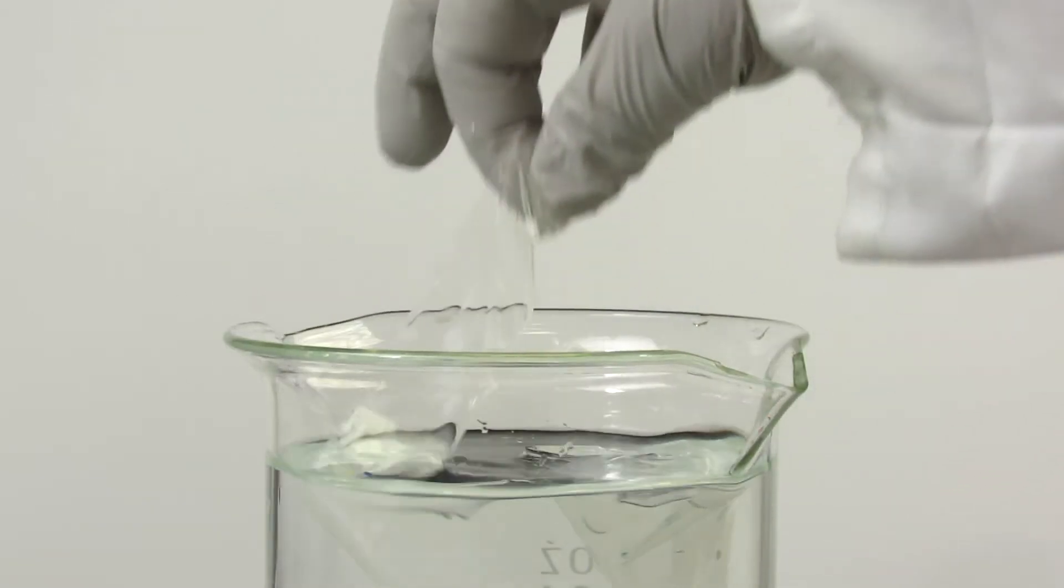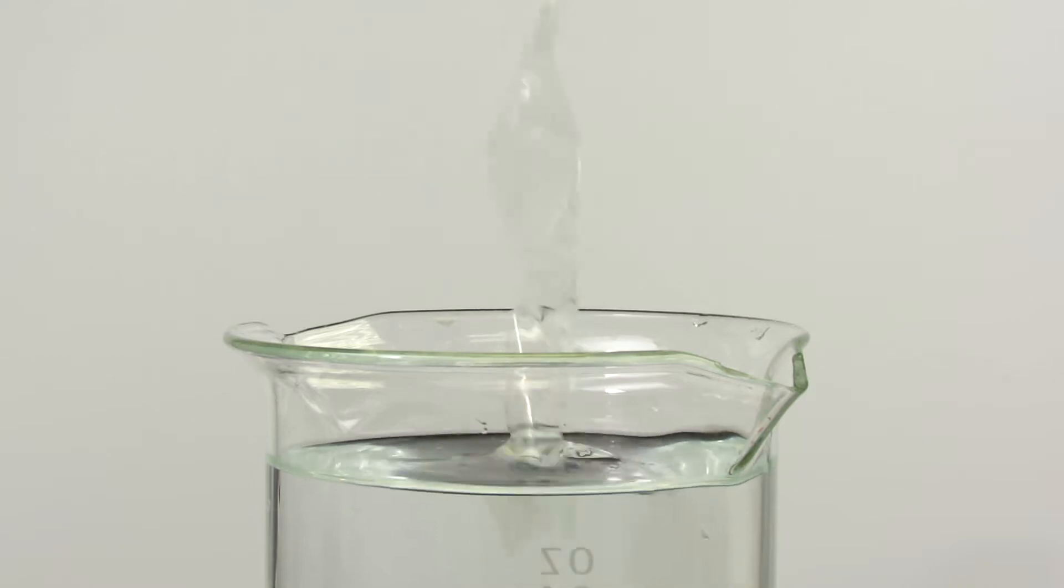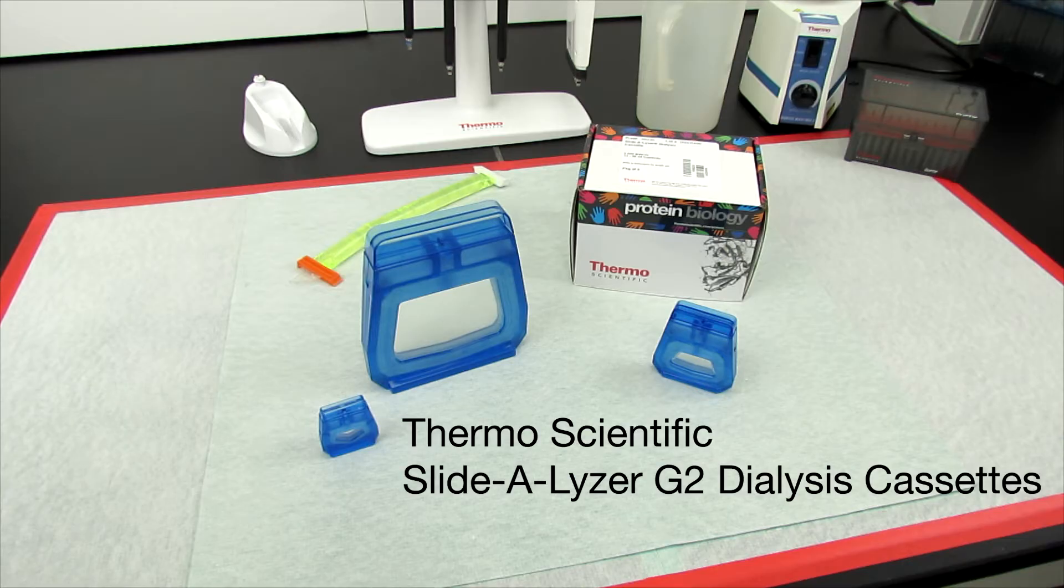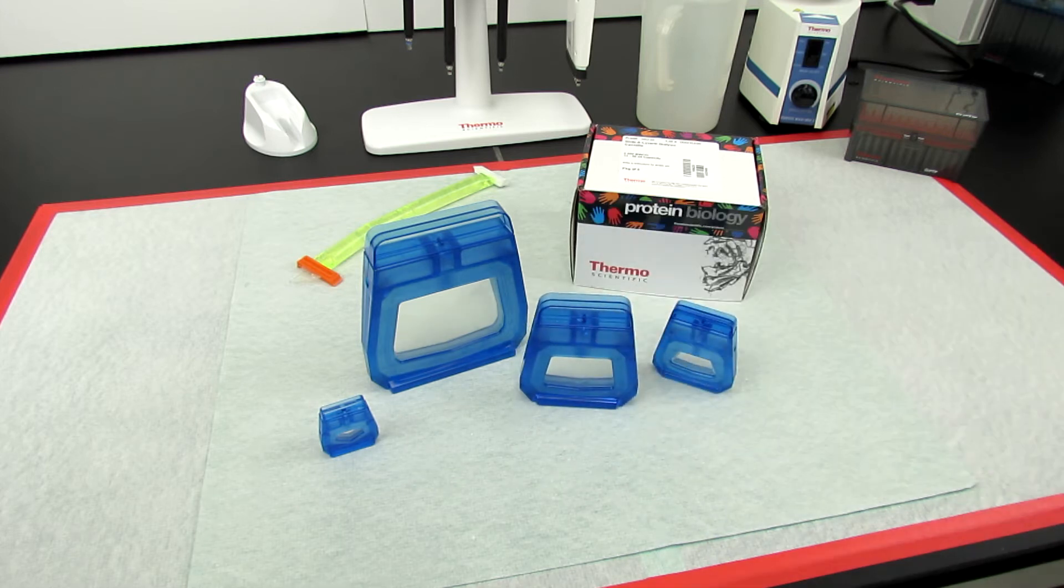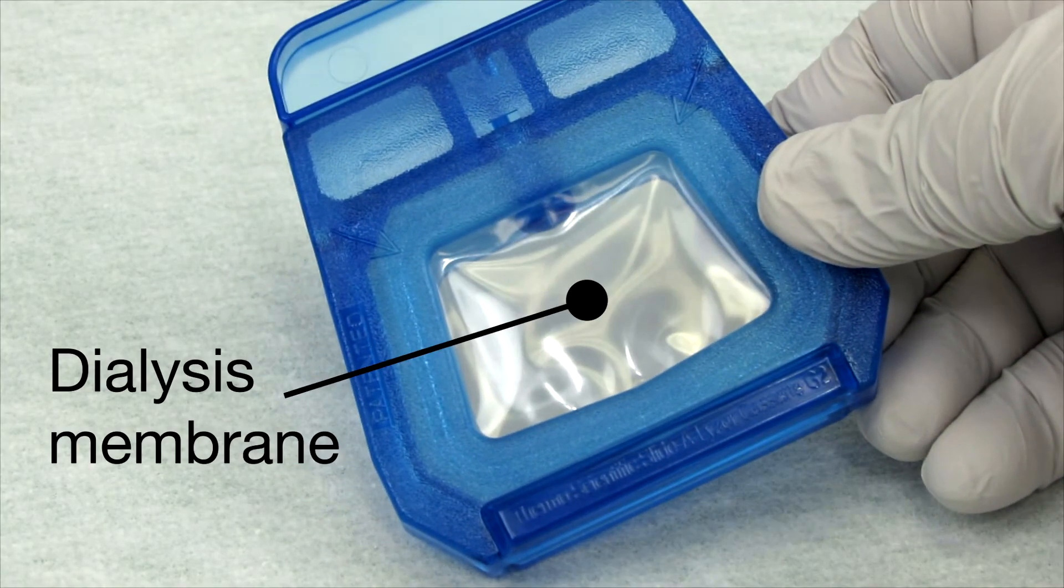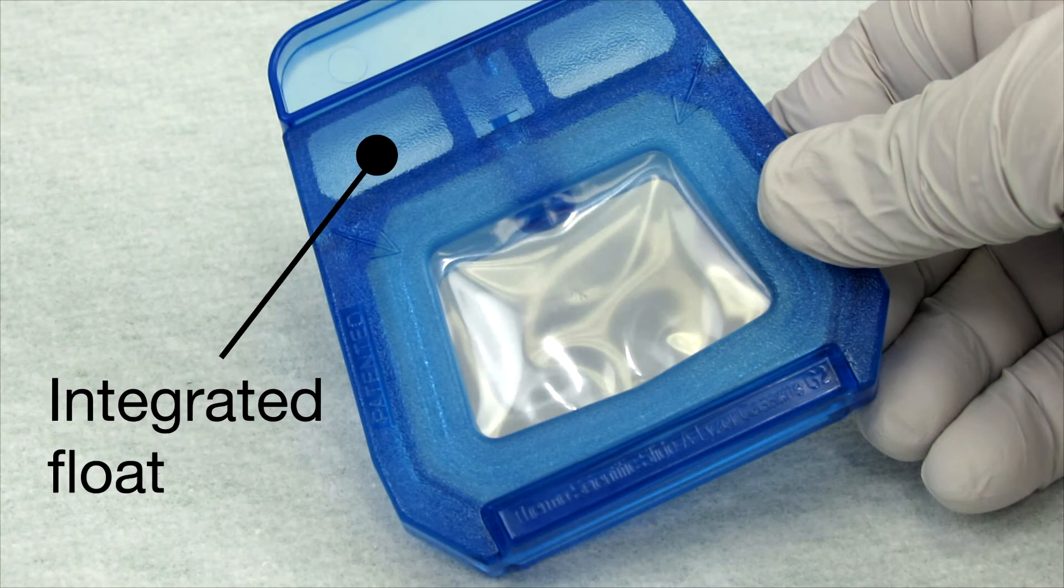Do you want an easier way to dialyze your samples? Thermoscientific Slidalyzer G2 dialysis cassettes remove salts and small molecule contaminants from sample volumes up to 70 milliliters by providing a large membrane surface area for dialysis and the structural support for flotation and easy handling.